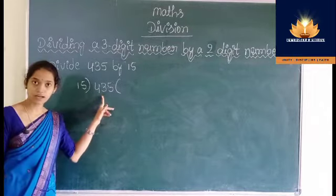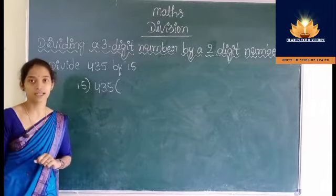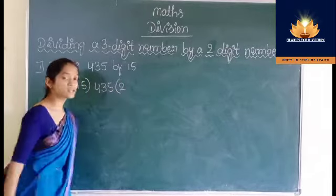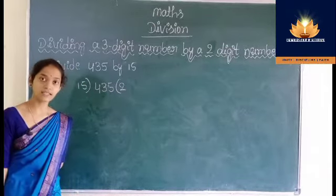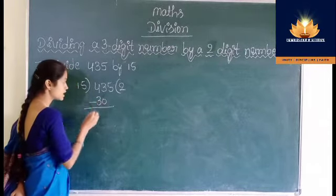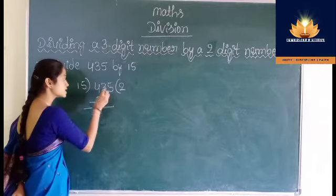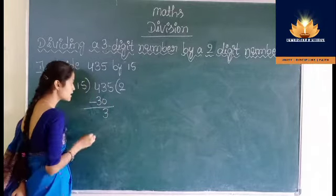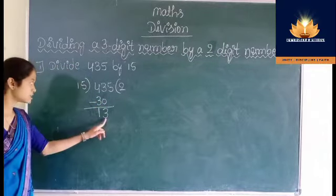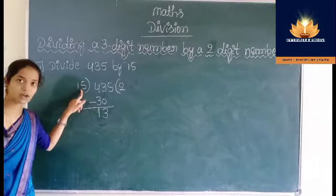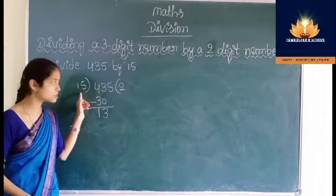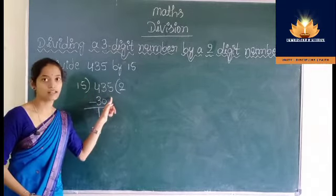That is why we consider 15 twos are 30. Write 2 in place of the quotient. Then write the product 30 below this 43. Now subtract 30 from 43: 3 minus 0 is 3, 4 minus 3 is 1. 13 is less than 15, so we cannot divide 13 by 15. Bring down the next number, that is 5.